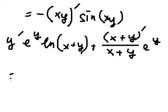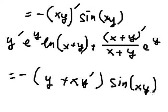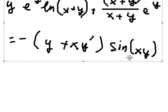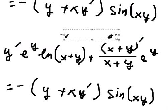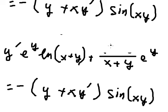For the first derivative of x, we have 1. The first derivative of y gives us dy/dx. So we have 1 plus the first derivative of y. For the last term with xy, the first derivative of x gives us 1, and the first derivative of y gives us dy/dx in here.